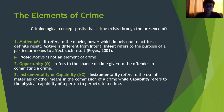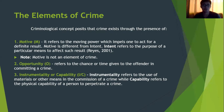Under the criminological concept, the elements of crime are motive, opportunity, and instrumentality. Opportunity refers to the chance or time for the offender to execute a crime. Instrumentality or capability refers to the use of materials or means in the commission of a crime, while capability refers to the physical ability of the person to perpetrate a crime. Motive refers to the moving power which impels one to act toward a definite result — for example, jealousy or revenge.